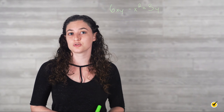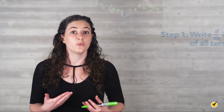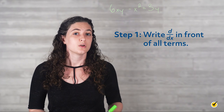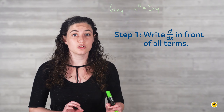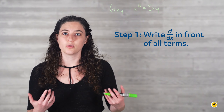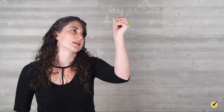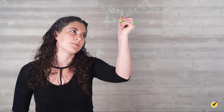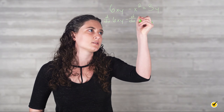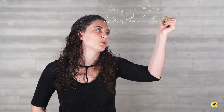To do this, we will want to take the derivative of each term in the relation. We can start by writing d over dx in front of every single term. Remember, d over dx is just a notation for saying take the derivative with respect to x. When we do this, we'll get d over dx of 6xy minus d over dx of x squared equals d over dx of 3y.